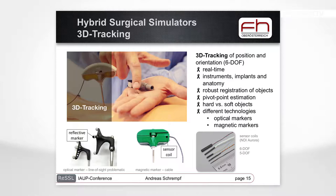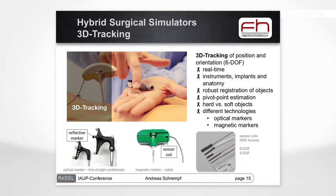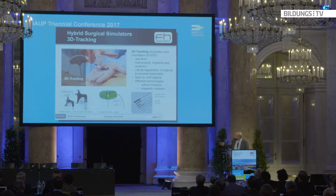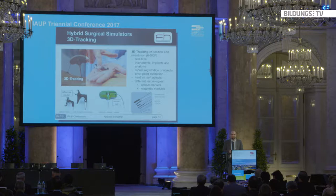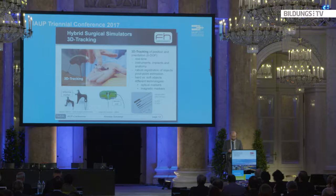For tracking real devices, we use either optical markers — a camera tracks the medical device by computing the position of the markers — or magnetic markers, which are small coils measuring position within a magnetic field. The sensor coil is very small, about 10mm long and 1mm in diameter, but requires a cable. The optical approach has the disadvantage that if something comes between the camera and the marker, the position is lost.